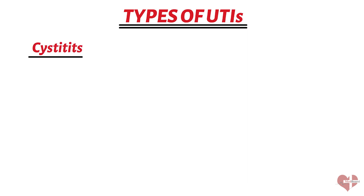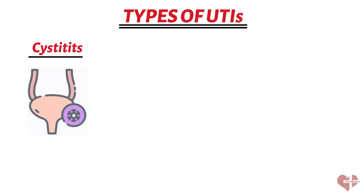There are a few different types of UTIs, but the most common one is called cystitis. This is an infection of the bladder and can cause symptoms like pain or burning when you pee, frequent urination, and feeling like you need to go but not being able to.